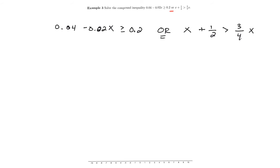On the left one, I'm going to multiply everything by 100. The reason is that's just going to cancel the decimal for me. It changes this to 4 minus 2x. On the other side, we get 20, but it still is greater than or equal to.